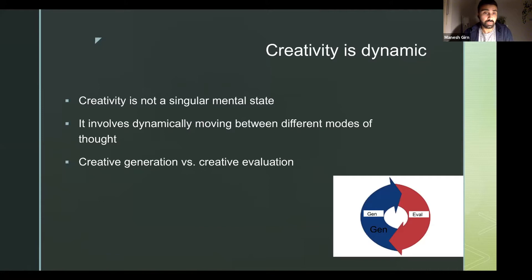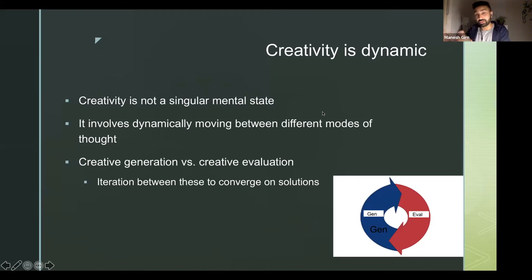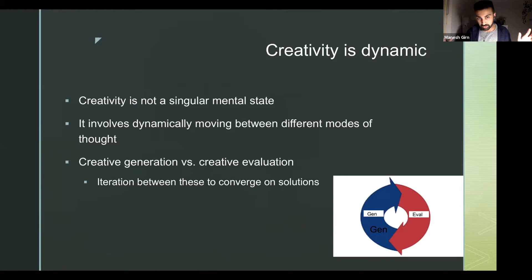It's not like you just generate ideas, then evaluate them, then you're done. A lot of times you go back and forth between generating, evaluating, maybe refining a bit, generating again — back and forth until you converge on something you're satisfied with. We can characterize creativity as a dynamic, iterative process between two broadly dissociable states: creative generation and creative evaluation. This has been characterized in multiple studies with brain imaging and cognitive psychology paradigms.